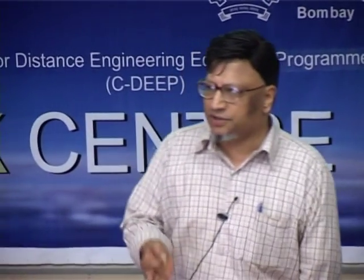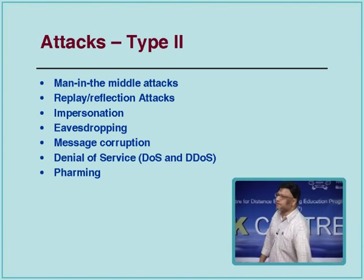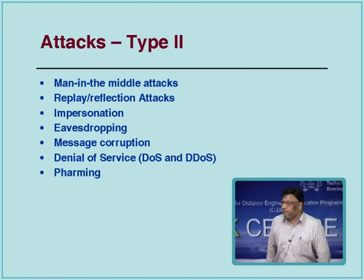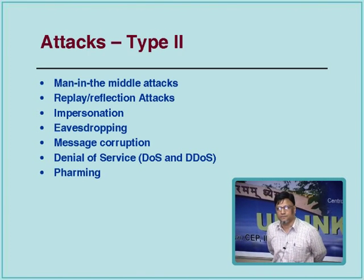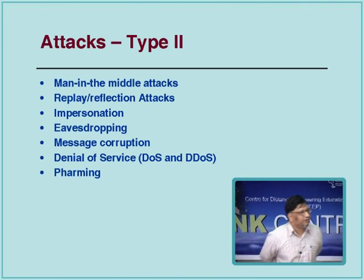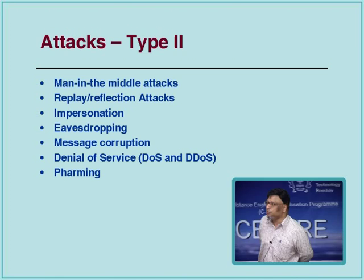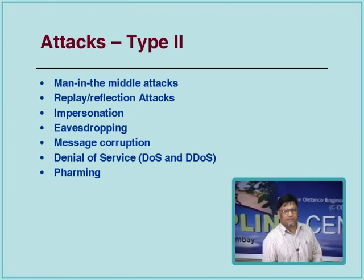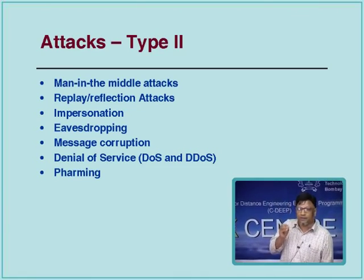Buffer overflow, phishing, cross-site scripting, SQL injection, and many worm and virus attacks are due to sloppy coding. On the other hand, Type 2 attacks such as impersonation caused by replay attacks and pharming attacks stem from different vulnerabilities. Pharming attacks are caused by vulnerabilities in the DNS protocol — the domain name service translates domain addresses to IP addresses, and an attacker may poison the DNS cache.